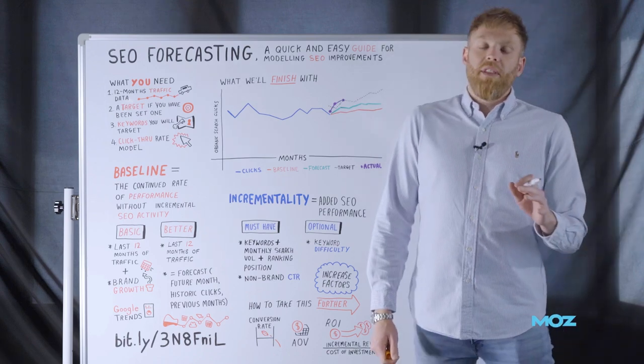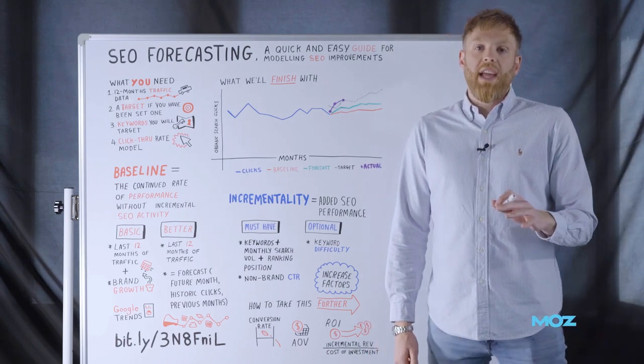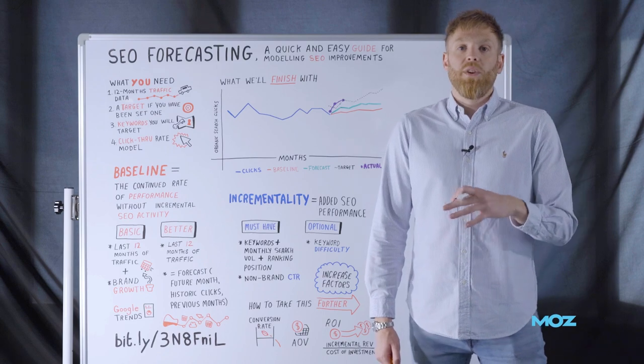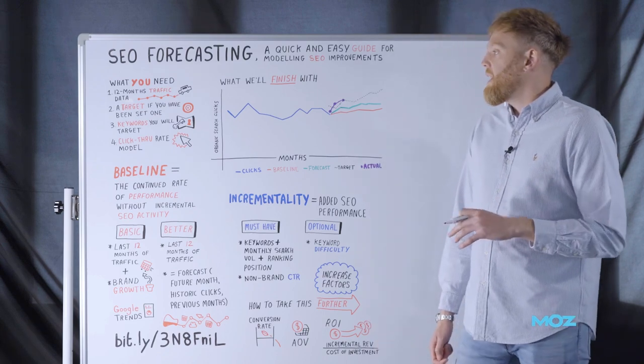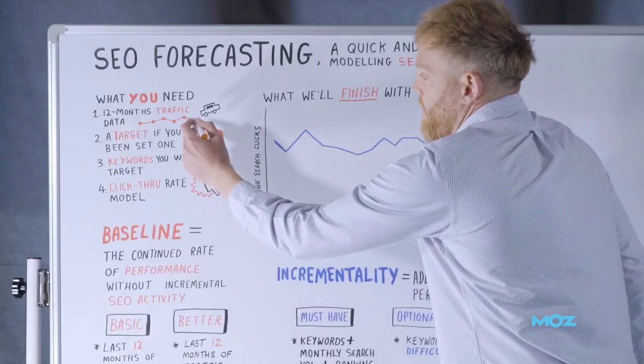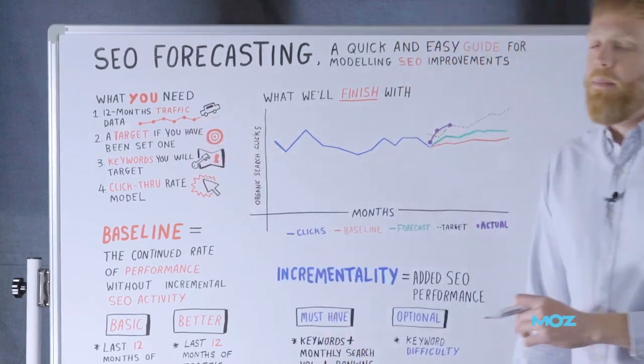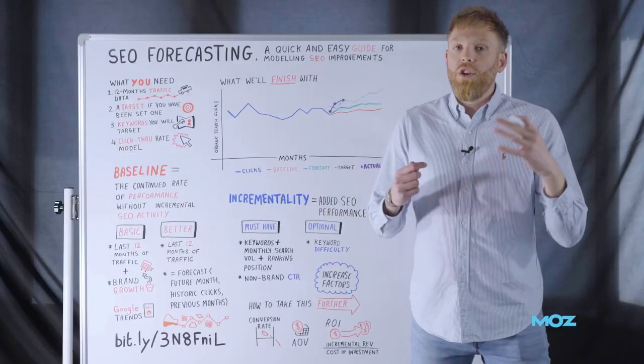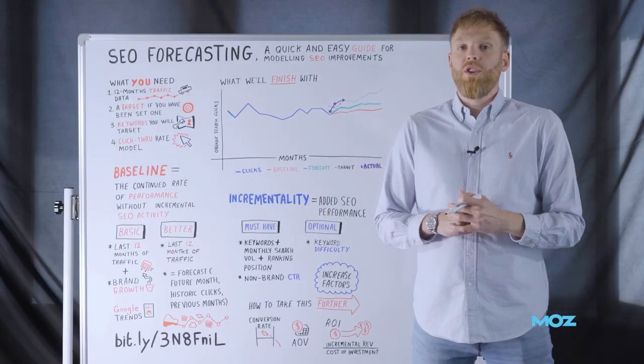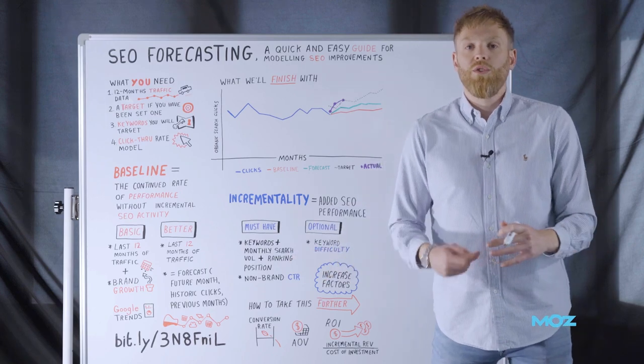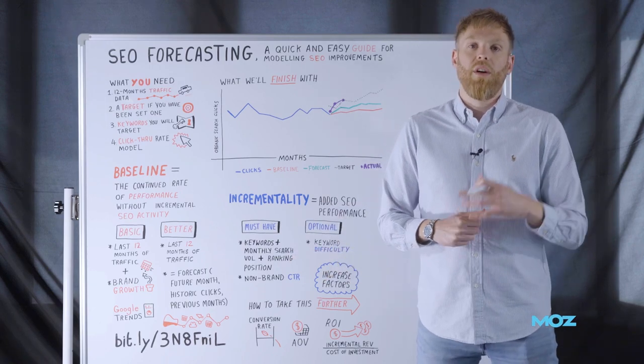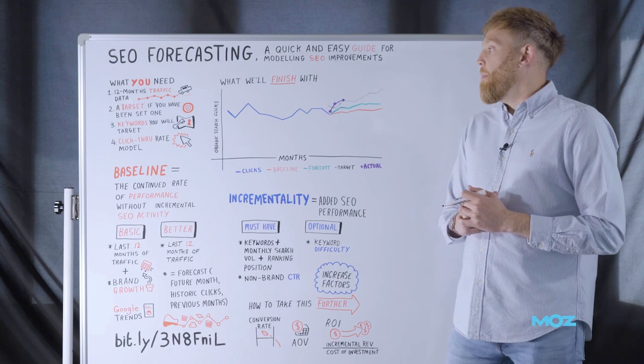So before we kick off, there's a few things that you'll need in terms of data in order to build your forecast. Firstly, 12 months traffic data. You can use your analytics platform or you can use Google Search Console to pull down 12 months worth of organic data by month.